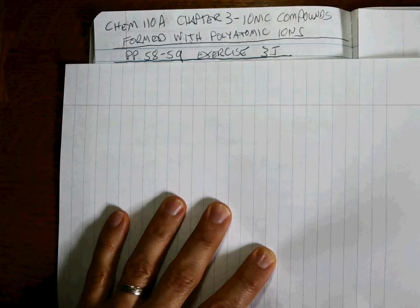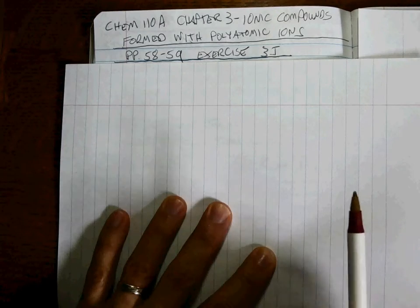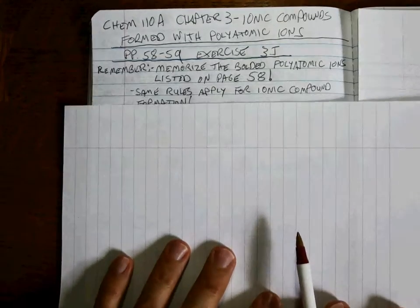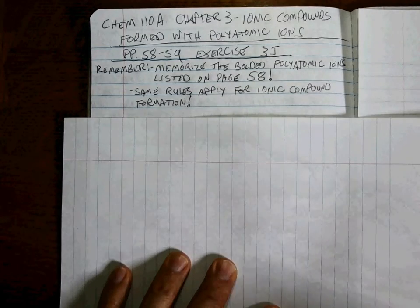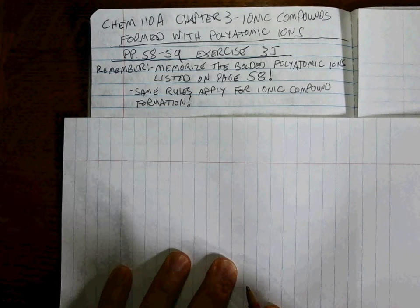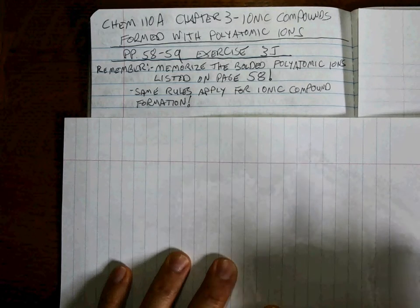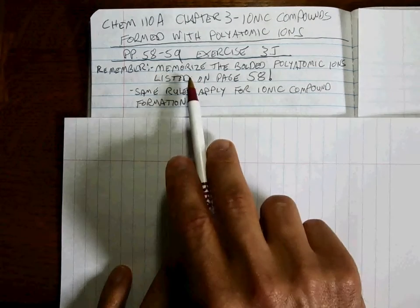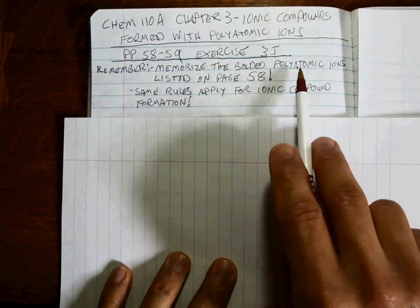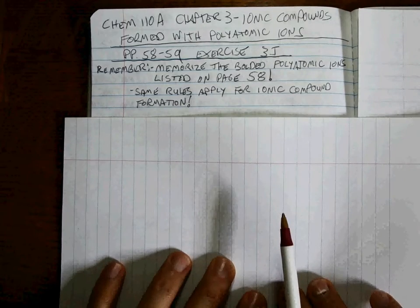Last time from chapter three we figured out how to make ionic compounds with the right formulas using monoatomic ions — one-atom ions. Now we're going to get involved with polyatomic ions. This is Exercise 3J. You have to remember we're going to use the same rules for ionic compound formulation: the overall charge has to be zero, with one type of cation and one type of anion. It helps a lot if you memorize the bolded polyatomic ions on page 58, because those are the ones we'll encounter most often.